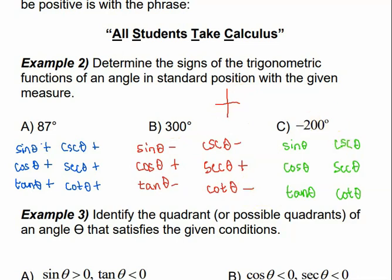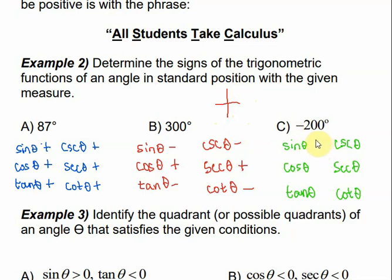For negative 200 degrees — if it's negative, that means we're rotating clockwise instead of counterclockwise. Negative 180 would be right here, so negative 200 is going to be in the second quadrant. Using 'all students,' that means sine and its reciprocal are positive and all the rest are negative.